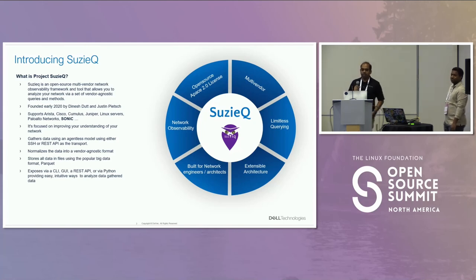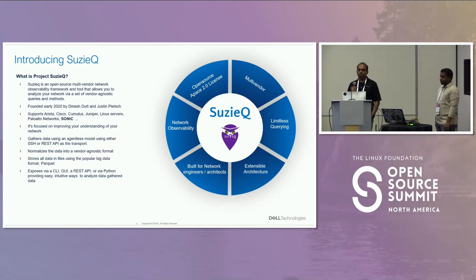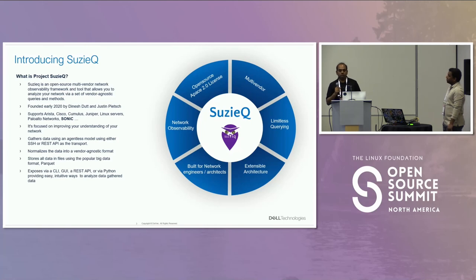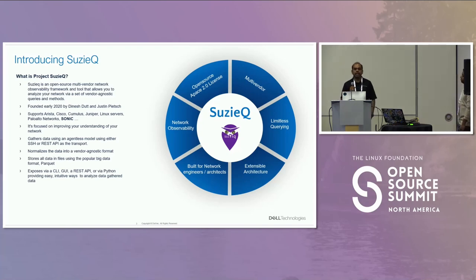Today we are going to introduce a fascinating tool that has been revolutionizing network observability. It is called SuzyQ. SuzyQ is an open source multi-vendor network observability framework and tool. This tool allows us to analyze your network using vendor-agnostic queries and methods. This means you can use SuzyQ to understand, diagnose, and improve your network, regardless of what hardware or software vendors you are using.